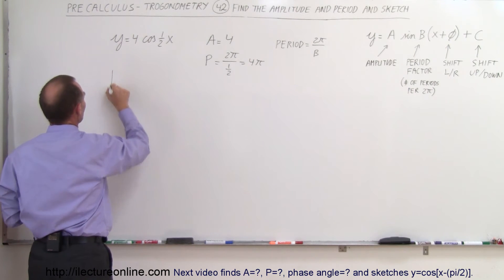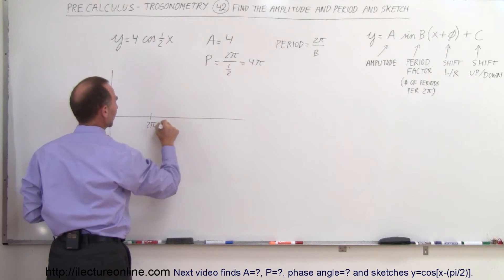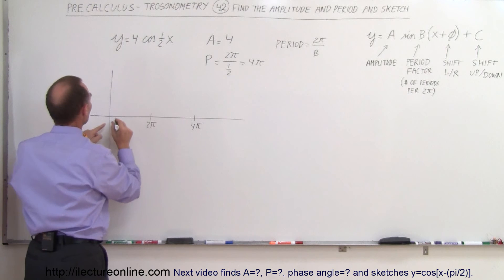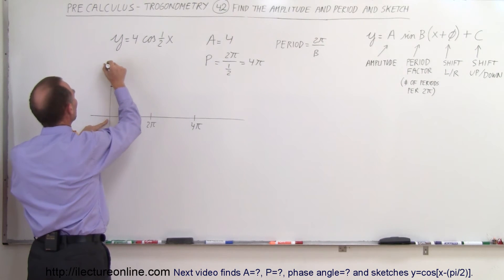So when we graph that or sketch it, we have 2 pi here, we have 4 pi there. 4 pi will give us a complete period starting at the maximum amplitude. So this is the y-axis, this is the x-axis.